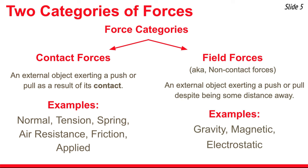The second large category of forces is called field forces. Field forces result even when there's no contact between the object in question and the external object in the surroundings that's exerting the push or pull. Examples of these types of forces are gravity, magnetic, and electrostatic. You don't have to be touching the earth to experience a gravity force, two magnets don't have to be touching to exert a push or pull, and two charged objects don't have to be touching to exert an electrostatic force.